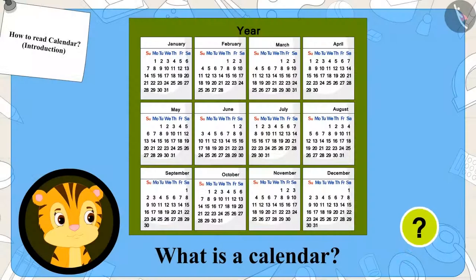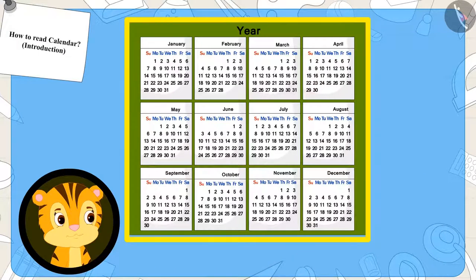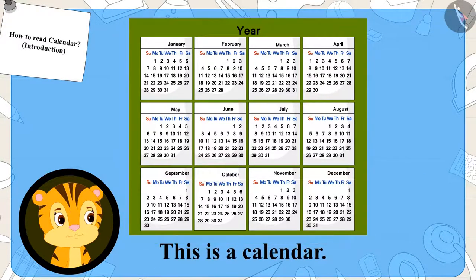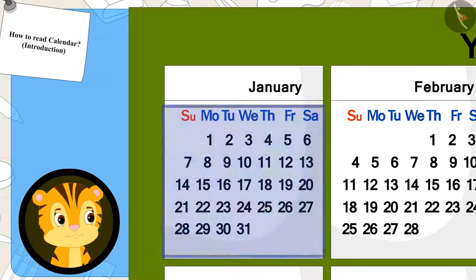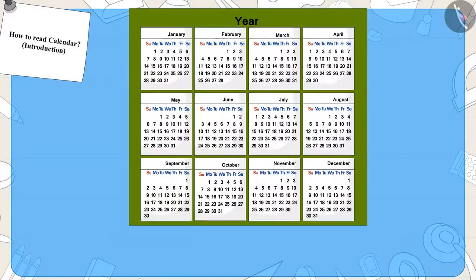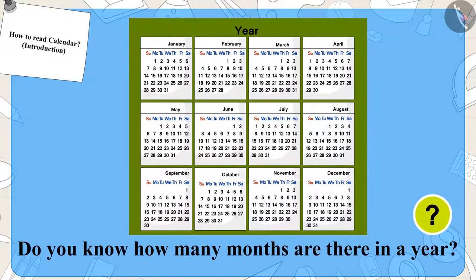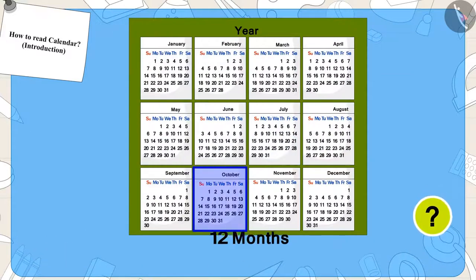Sher Khan's mother is explaining to him that this is a calendar. It depicts the months of the whole year and the days in those months. Children, do you know how many months are there in a year? Exactly — twelve months!